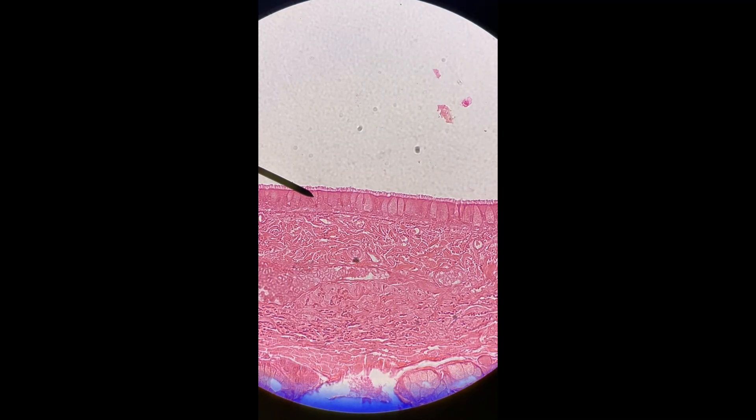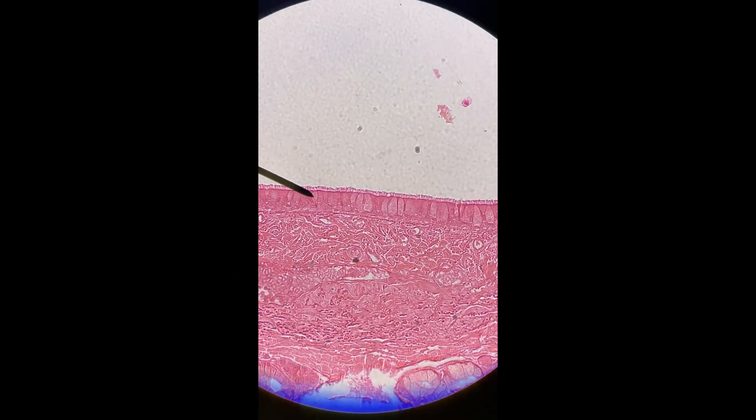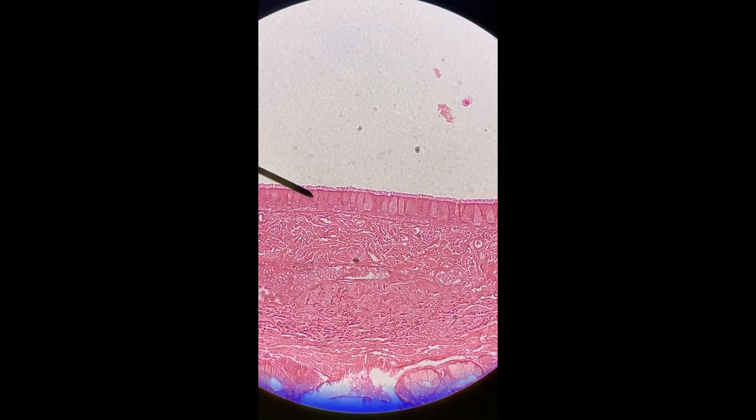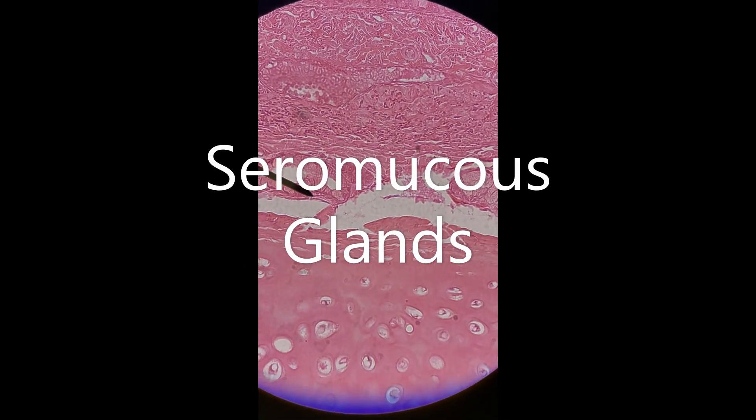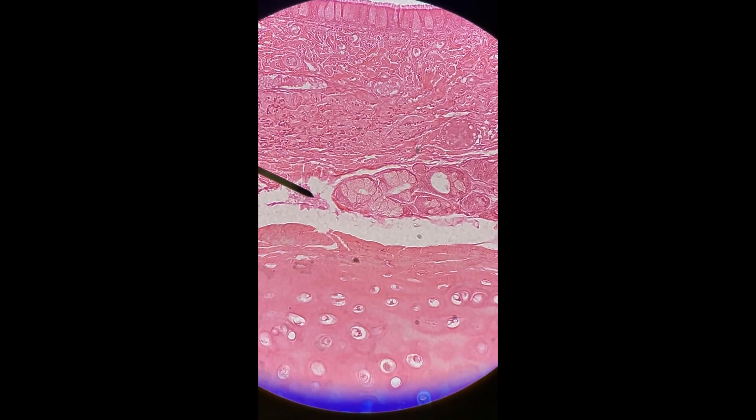Those sort of bubble-shaped objects in that epithelial layer - those are the goblet cells that produce mucus. The seromucus glands are these down here, so you see there's some glands down here.